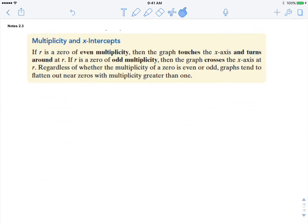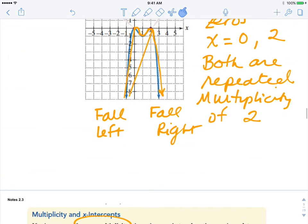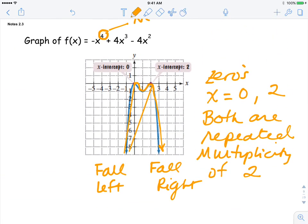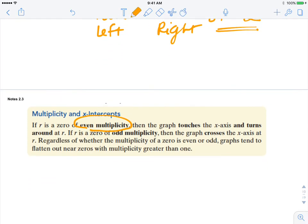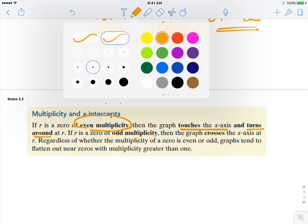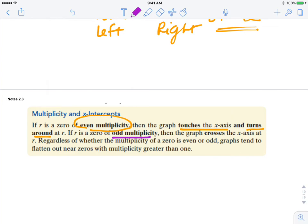And that's the next thing, talking about multiplicity. If you have an even multiplicity, so like we had on these two, they were both a multiplicity of 2, what happens is the graph at that zero is going to touch the x-axis and turn around. The other situation is when you have an odd multiplicity. Then what happens is at that zero, it's going to cross through the x-axis.